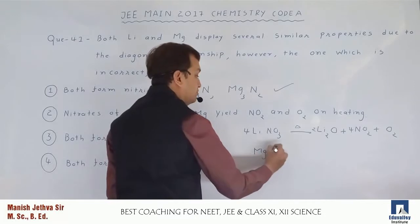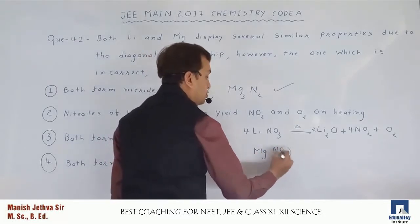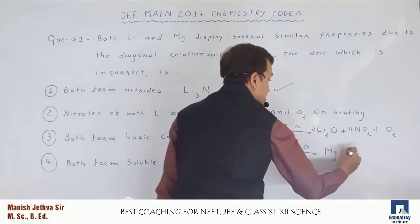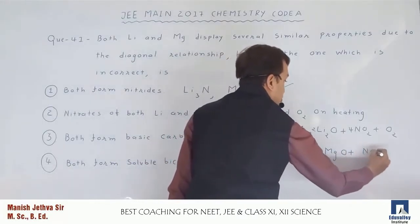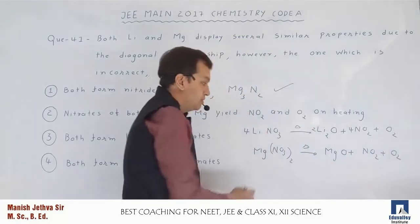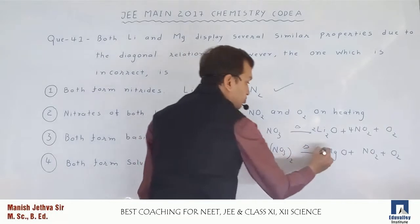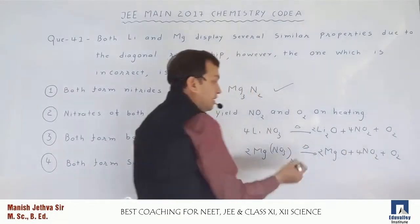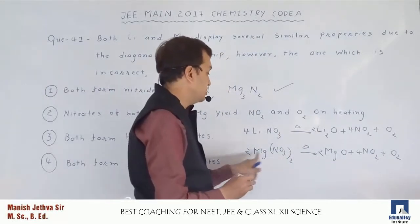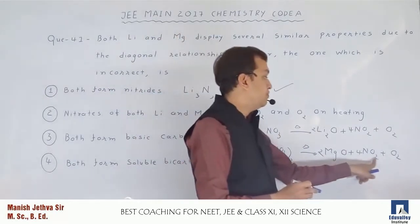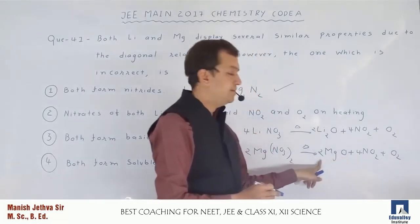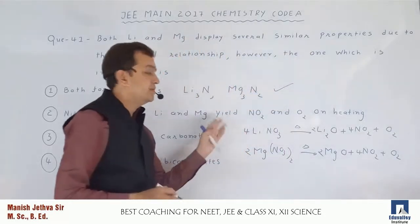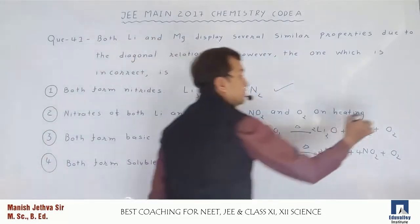For magnesium, Mg(NO₃)₂ on heating also gives MgO, NO₂, and O₂. Multiplying by 2 we get 2 moles of MgO, 4 moles of NO₂, and the remaining oxygen. Oxygen count: 3 × 2 × 2 = 12, and balancing gives 8 + 2 = 10 + 2 oxygen. So NO₂ and O₂ are yielded — this option is also correct.